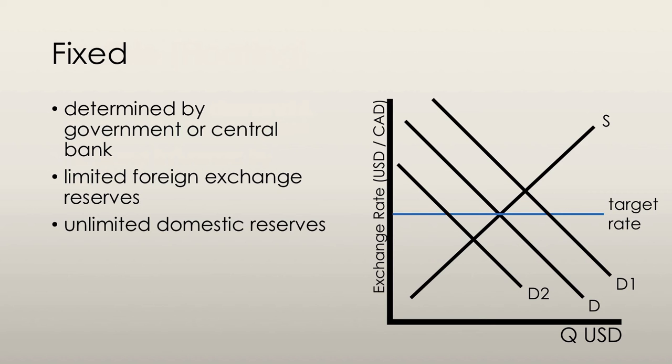But let's say that from our original equilibrium position, we move to D1. Then what happens? Well, what the central bank can do is it can sell its own currency to increase the supply and thus restore equilibrium.